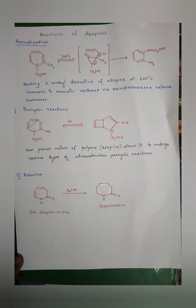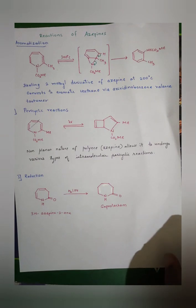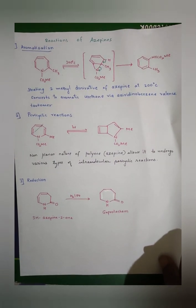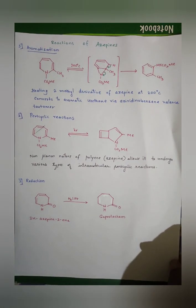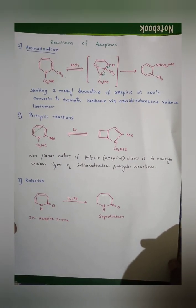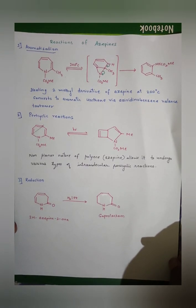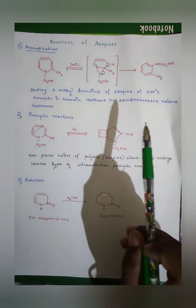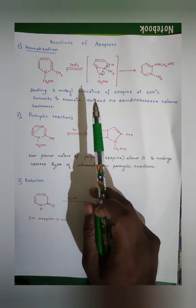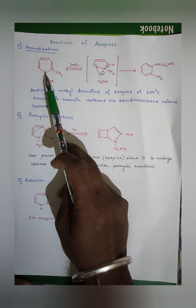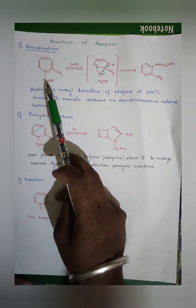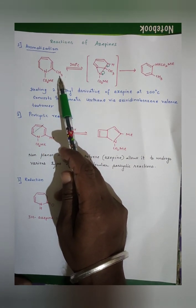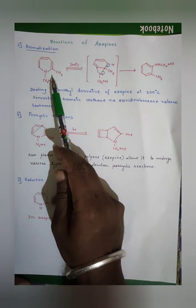Now let's discuss three reactions of azepines. The first is aromatization. Azepines are known as non-aromatic compounds because they are non-planar structures and have 8 pi electrons. To be aromatic, a molecule should have 4n+2 pi electrons, but azepines have 4n electrons.